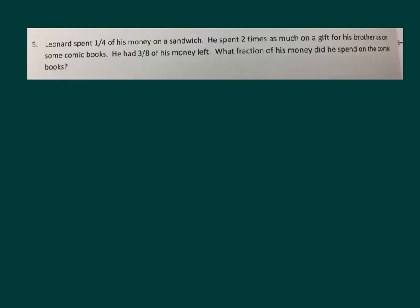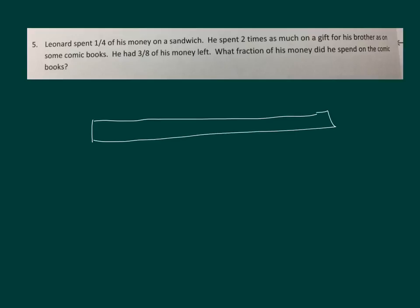Leonard spent one-quarter of his money on a sandwich. He spent two times as much on a gift for his brother as on some comic books. He had three-eighths of his money left. What fraction of his money did he spend on the comic books? Let's draw a picture. One-fourth of his money was on a sandwich, which also equals two-eighths. He spent twice as much on the gift as on comic books, so those two portions relate to each other. He had three-eighths of his money left.